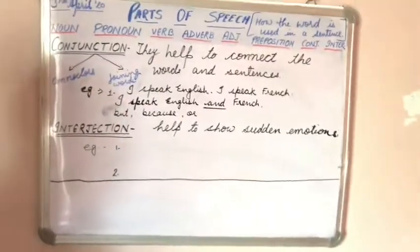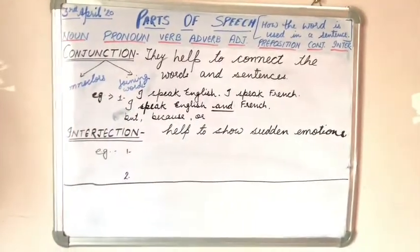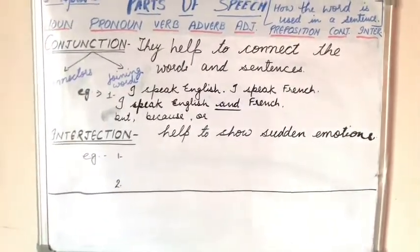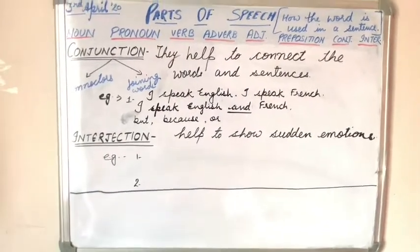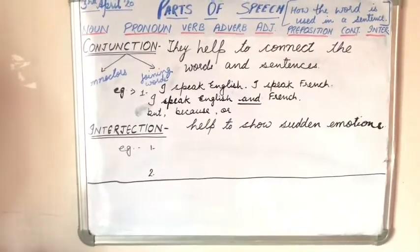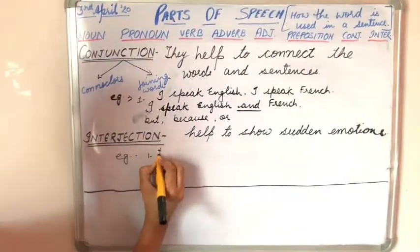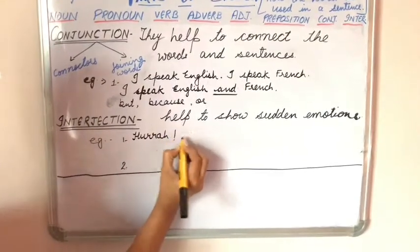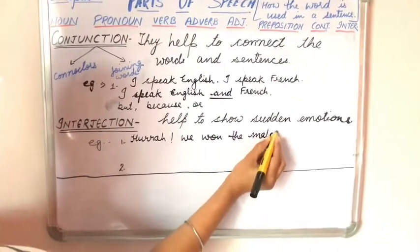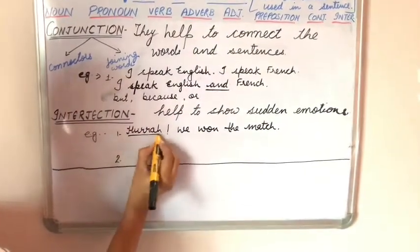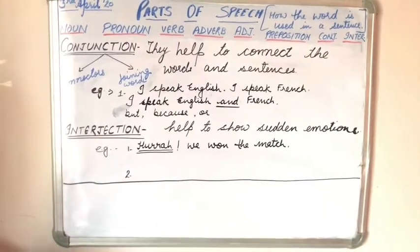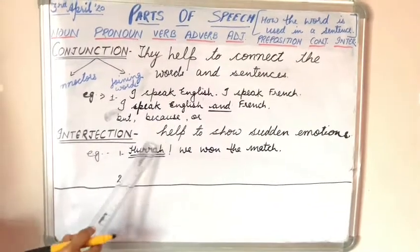Now let's see the interjection. Interjections help us to show sudden emotion like surprise, anger, and excitement. Let's understand it with an example. The first example is 'Hurray! We won the match.' This word 'hurray' is expressing or showing happiness or joy. This word is an interjection.